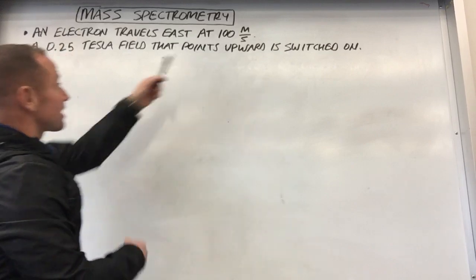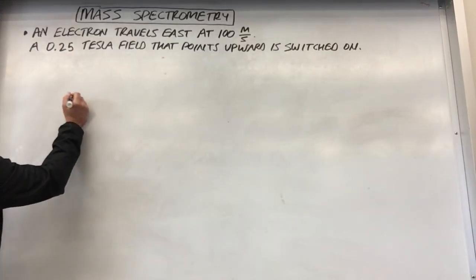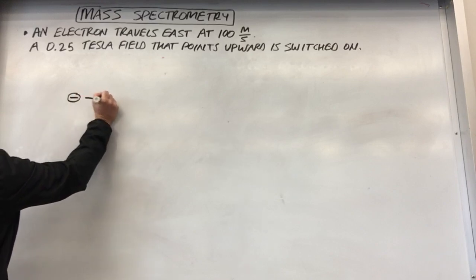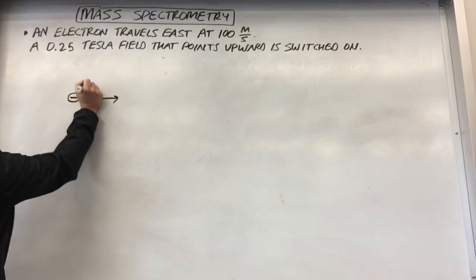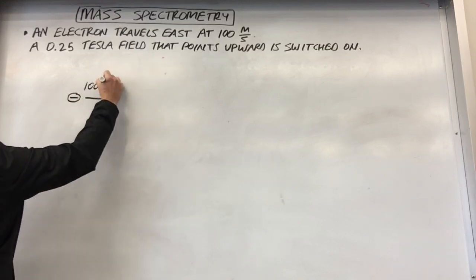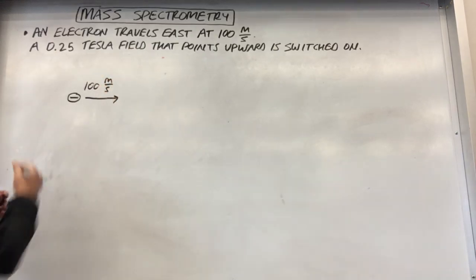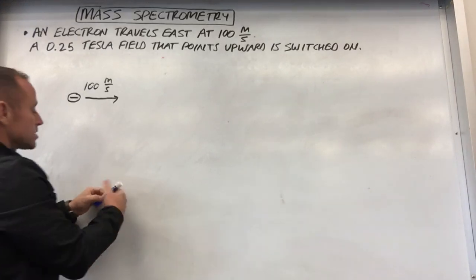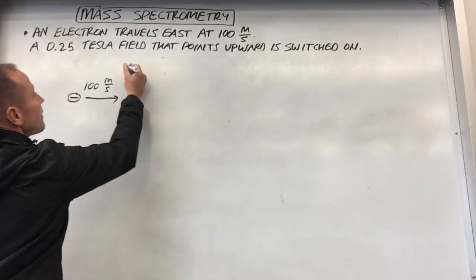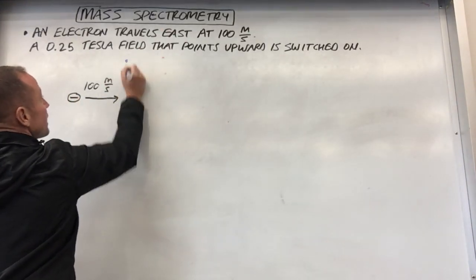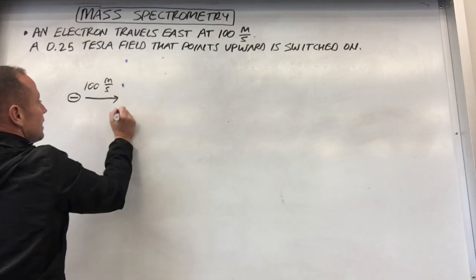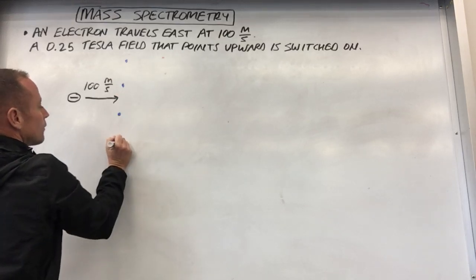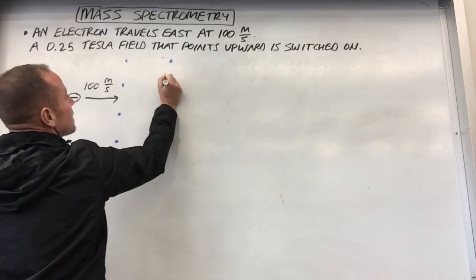It says an electron travels east at 100 meters per second. So let's just draw an electron going to the east here, 100 meters per second. And then it says that a 0.25 Tesla field that points upward is switched on. So we'll say there's a magnetic field suddenly that points out of this page or out of the board, and I'm gonna indicate it going out of the board by drawing it with these little dots.